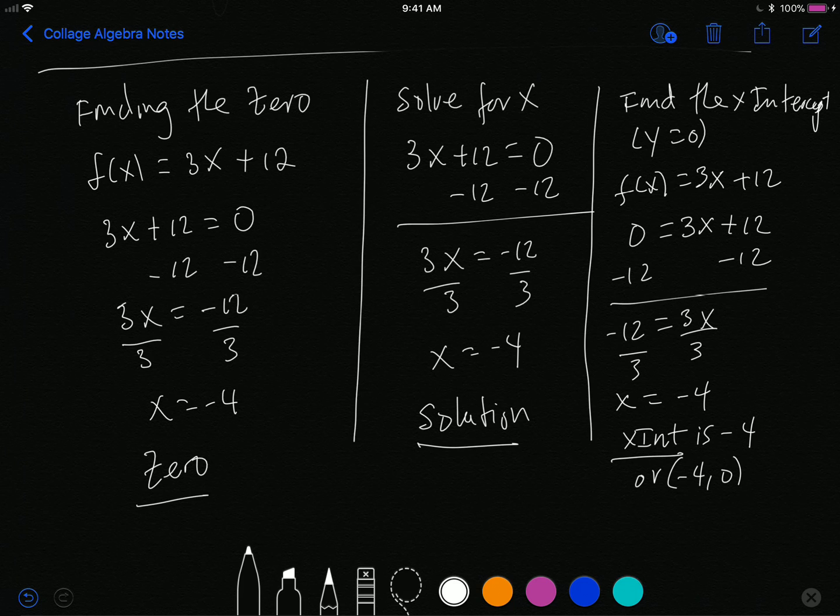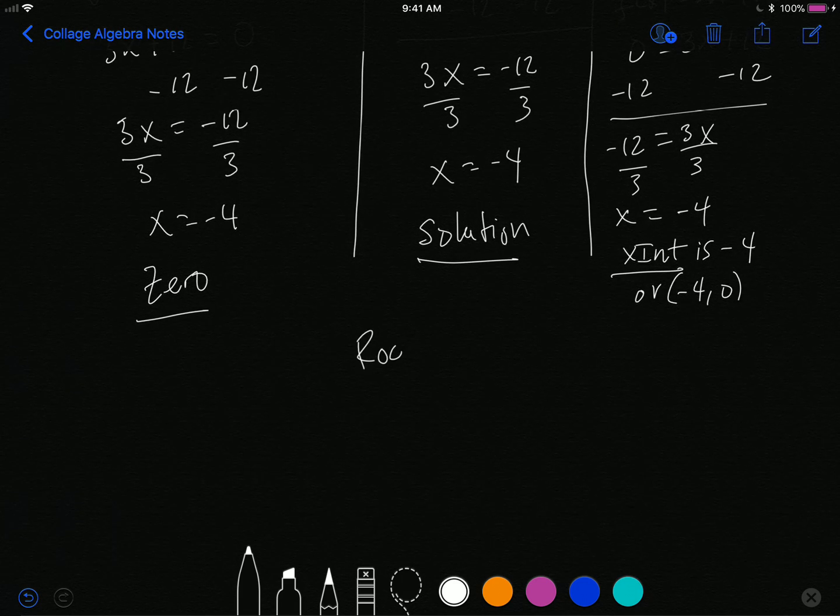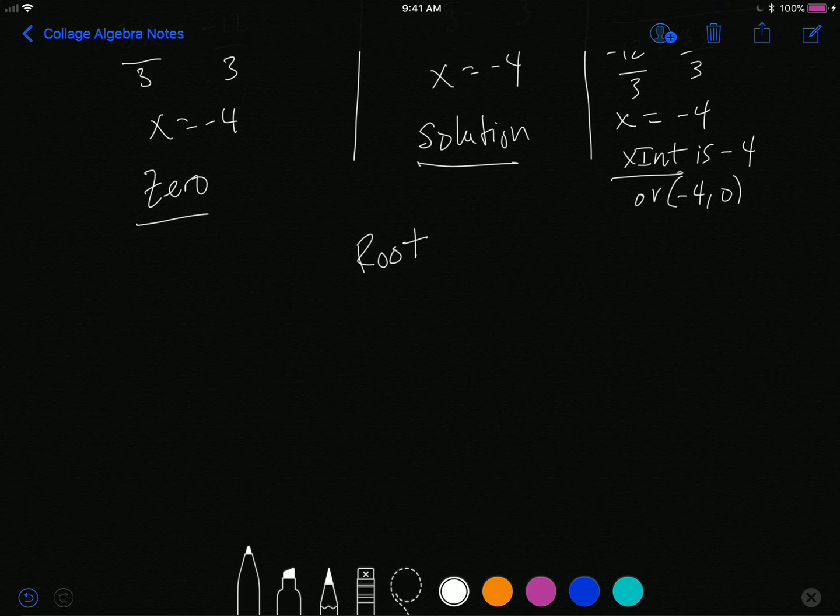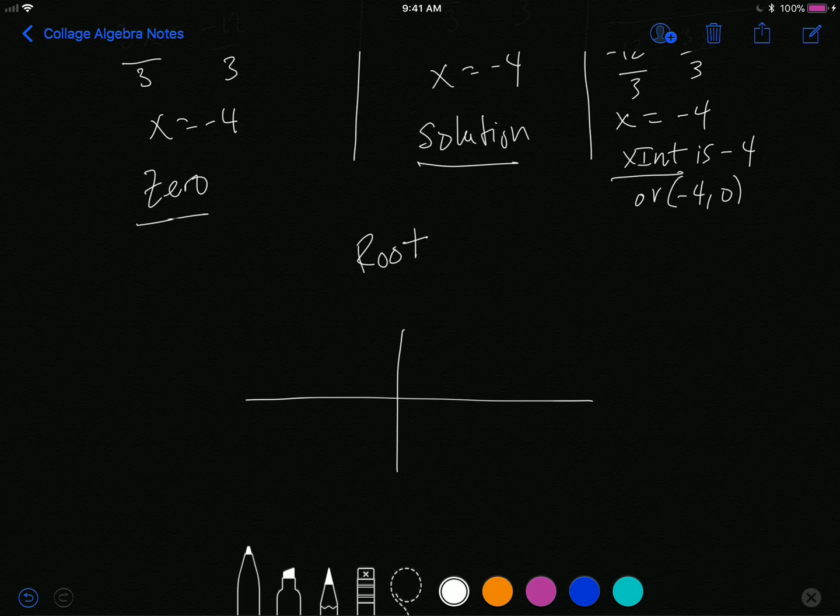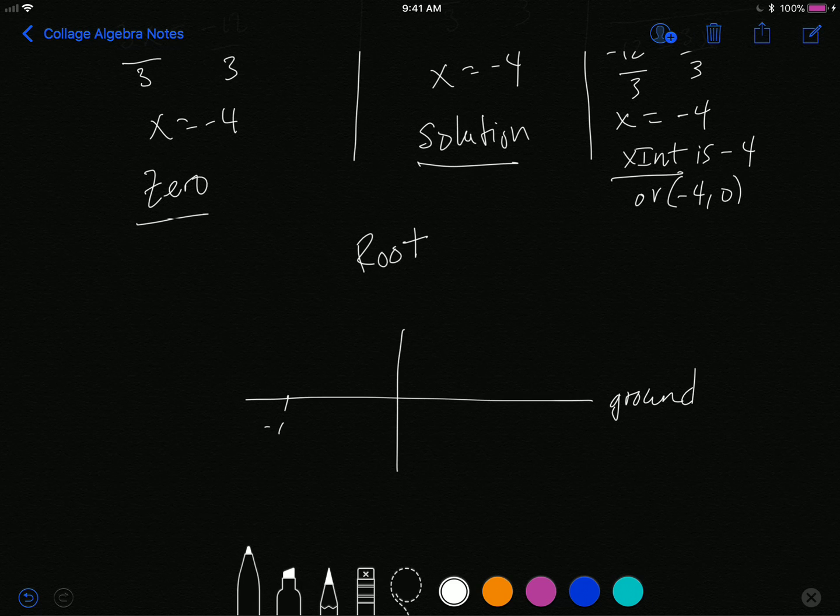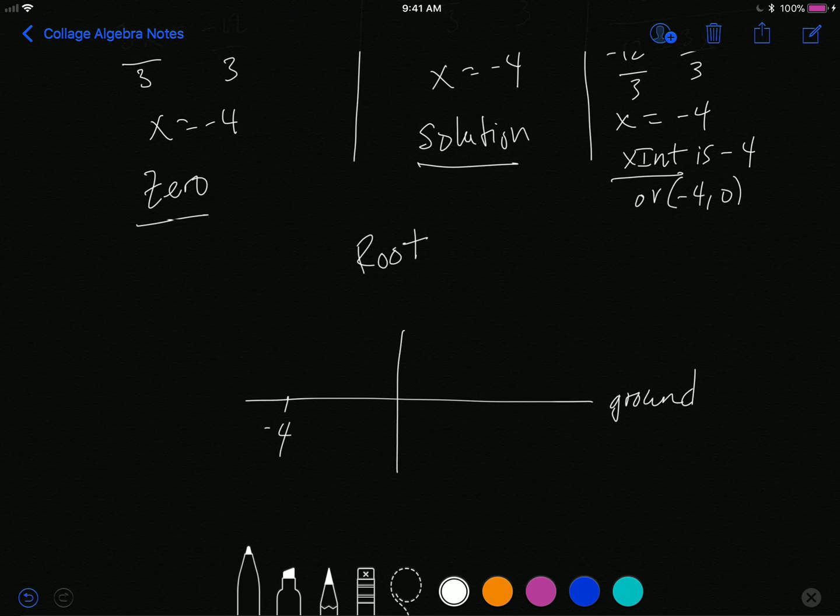All of these right here are also called the root of the function. I don't know why they call it the root, but I believe it has something to do with trees. The roots go under the ground, but if I had to graph the function right here, if you think of the ground as the x-axis being the ground, well negative 4 right here, my function has a positive slope of 3, so my function would look something like this.